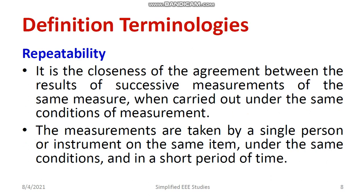Now, what do you mean by repeatability? It is better to take a reading 5 to 10 times and then take the average to understand the actual value closer to the true value. Repeatability is the closeness of agreement between the results of successive measurements of the same quantity, carried out under the same conditions. Measurements are taken by a single person or instrument on the same item under the same conditions in a short time period. For example, if you get readings of 0.1 A, 0.11 A, 0.12 A, and 0.13 A, you take the average — this process is called repeatability.